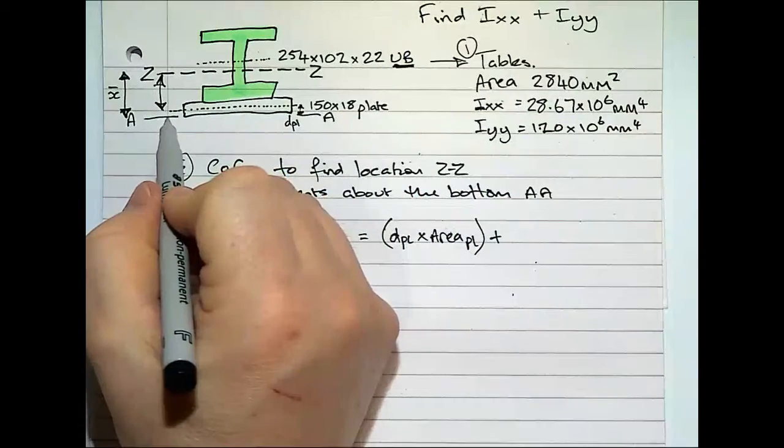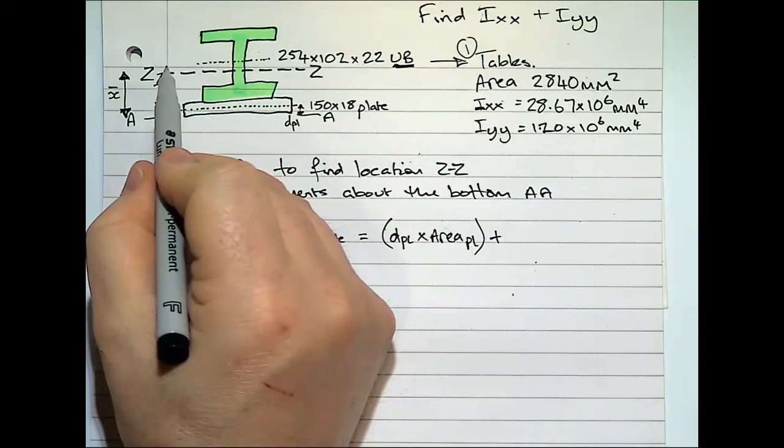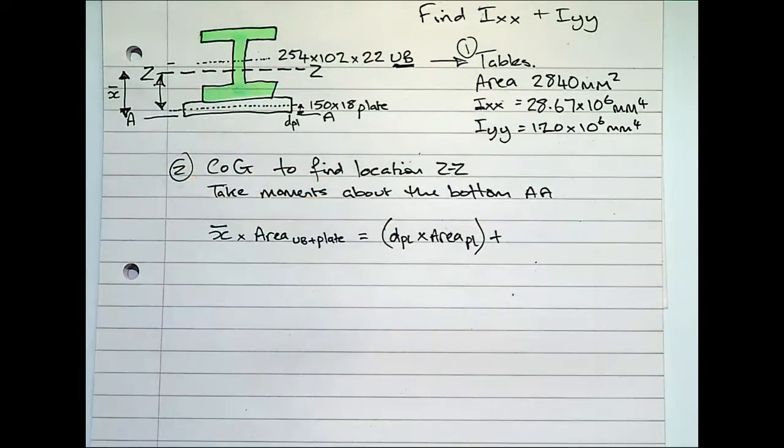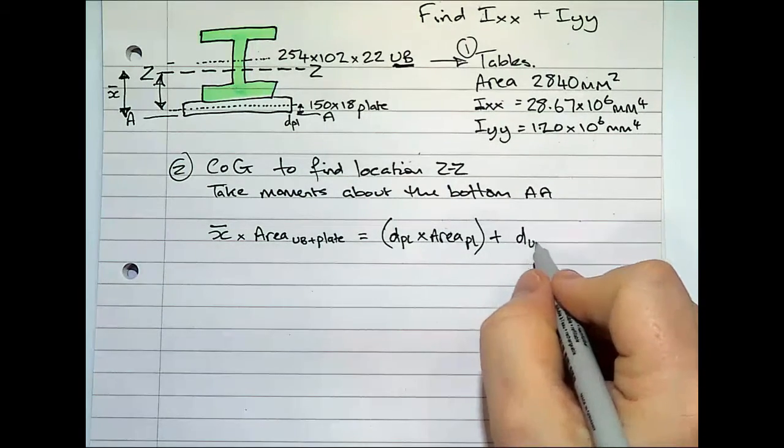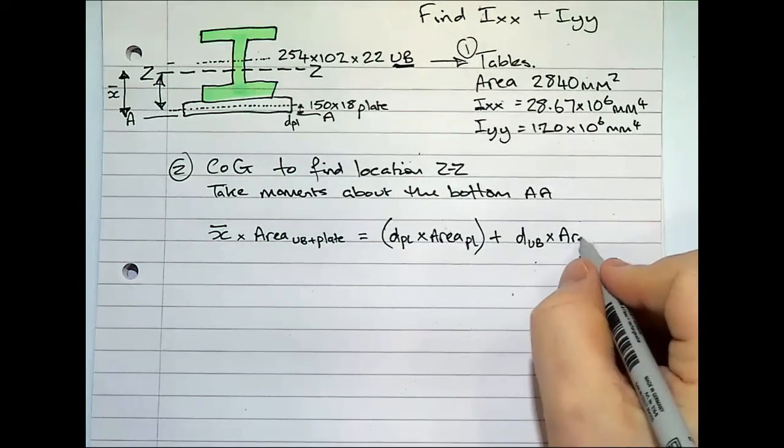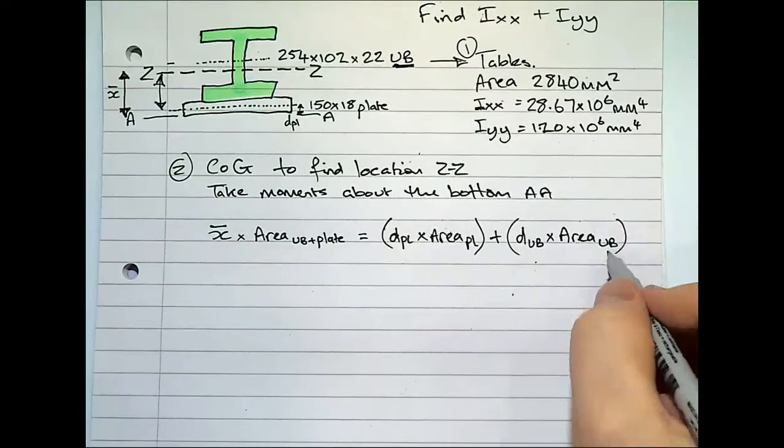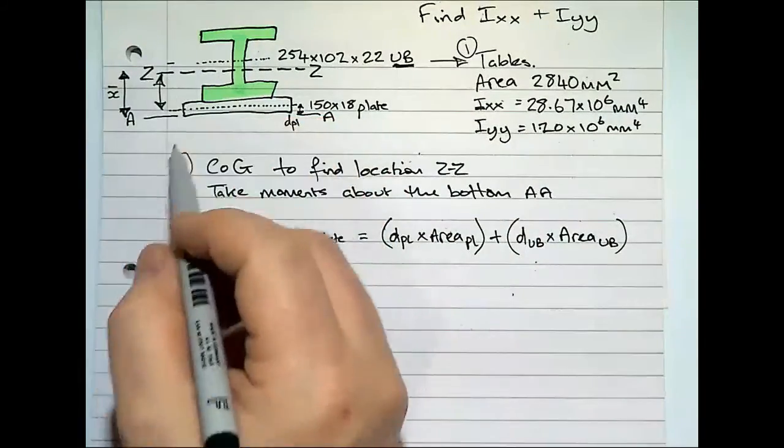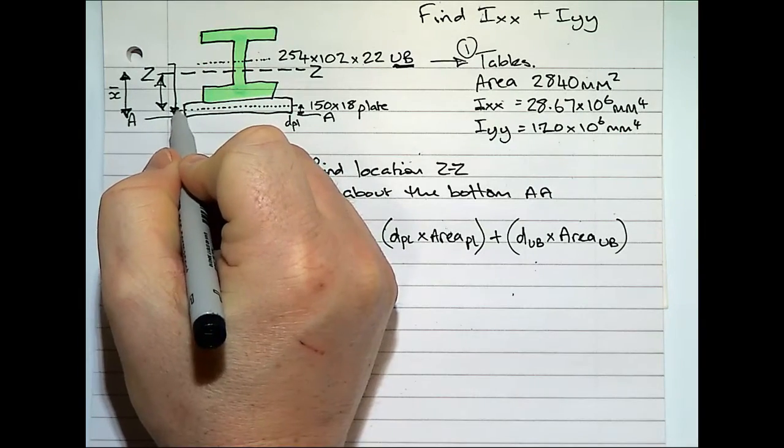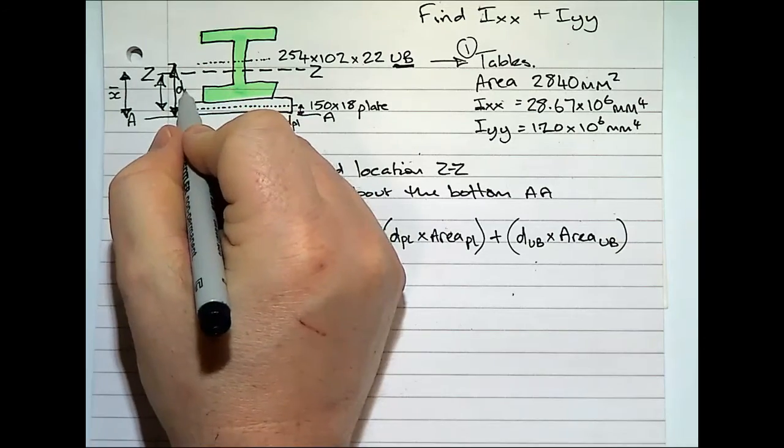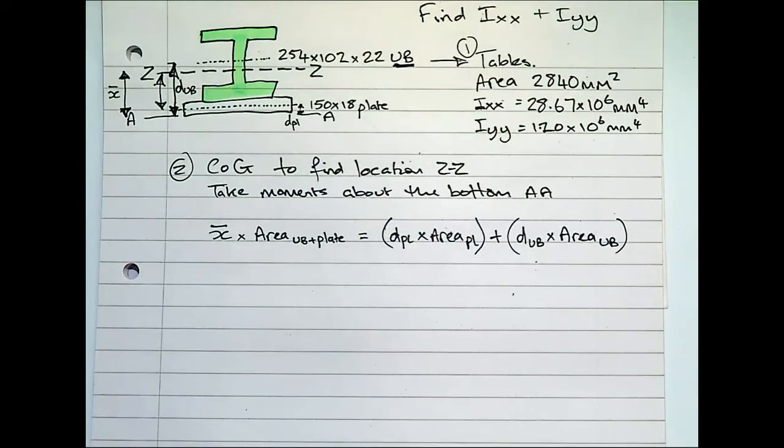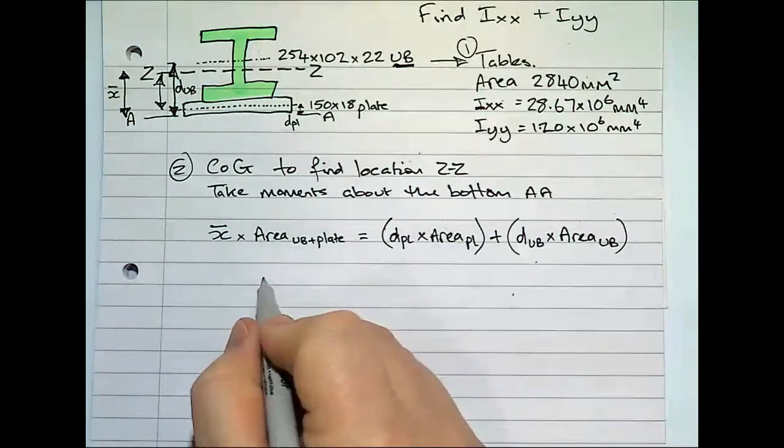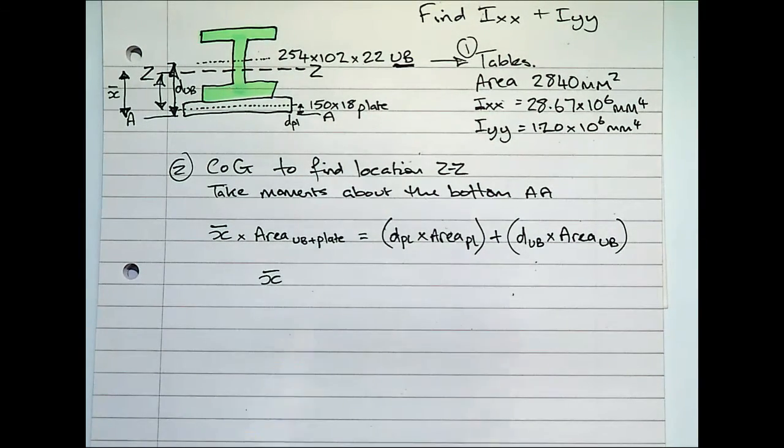Then you've got from the bottom to the position of the neutral axis for the universal beam. So you've got distance to the universal beam times by the area of the universal beam. So my drawing is quite small, but it's that distance there. We rearrange that so that we have X bar. So this again is just going through center of gravity.